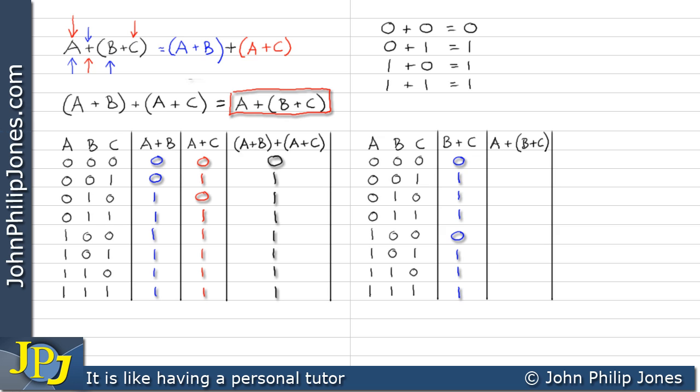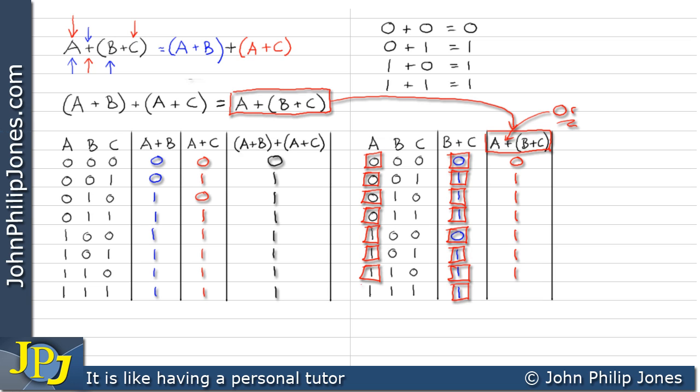Let's have a look at this. And we can see that relates to this column here. And we can see there's an OR there which means we're going to be ORing the A with the B or C. It gives us a 0. A 0 or a 1 gives us a 1. A 0 or a 1 gives us a 1. A 0 or a 1 gives us a 1. And then a 1 or a 0 gives us a 1. A 1 or a 1 gives us a 1. A 1 or a 1 gives us a 1. And finally a 1 and a 1 gives us a 1.